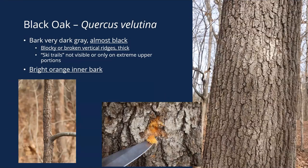The bark tends to be darker in color and a little thicker than northern red oak, and tends to not have those ski trails — or they're only really at the upper portions of the tree. The lower portion tends to have much thicker, heavier, blockier bark. If you dig under the bark, it's going to have an orange-colored inner bark, and sometimes you can even see that in the furrows on younger trees. That's a great way to tell them apart.